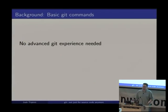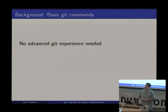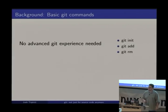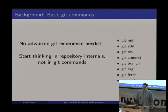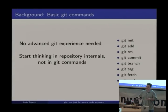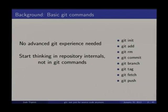You really don't need advanced experience with Git to use it as a programmatic data store. If you know how to create a repository, add and remove content, commit things, create branches and tags, and push and pull data, you've got everything you need. The big thing, though, is you really want to start thinking in terms of repository internals, not the high-level Git commands. If you know what the underlying object store is doing, you start thinking: what Git command do I run to make this change to the underlying state?